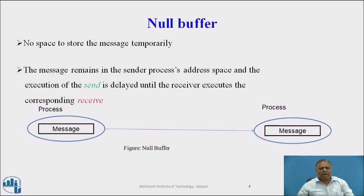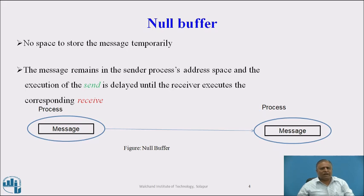No Buffer. Between sender and receiver, there will not be any buffer — that is called No Buffer. It will take only one copy operation from sender's address space to receiver's address space, so there is no space to store the message temporarily. The following strategies may be used: the message remains in the sender's process address space and execution of send is delayed until the receiver executes the corresponding receive. Alternatively, the message is discarded and a timeout period for acknowledgement is set, assuming the receiver has already executed receive. Disadvantage: the sender may have to try several times and may ultimately give up. This is the figure of Null Buffer where messages are copied from sender process to receiver process.